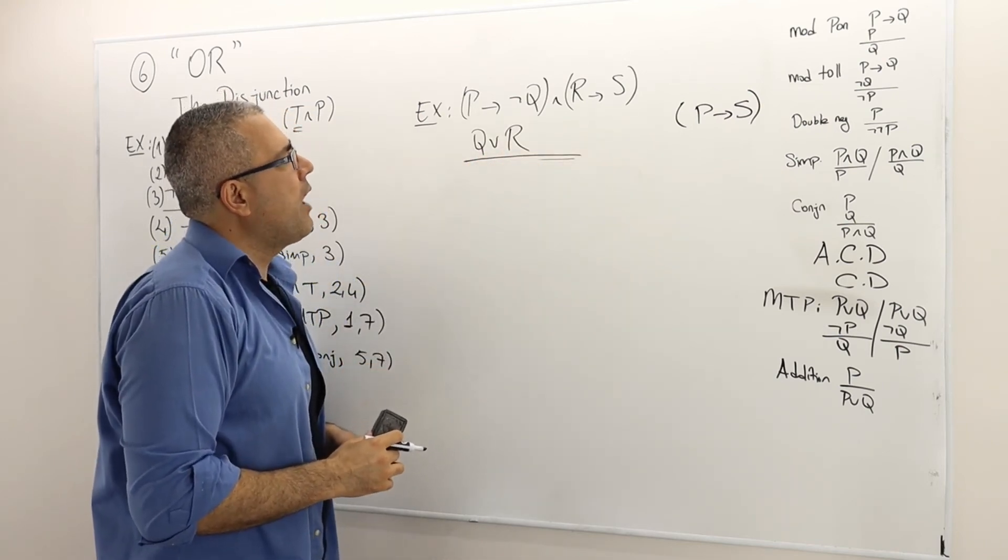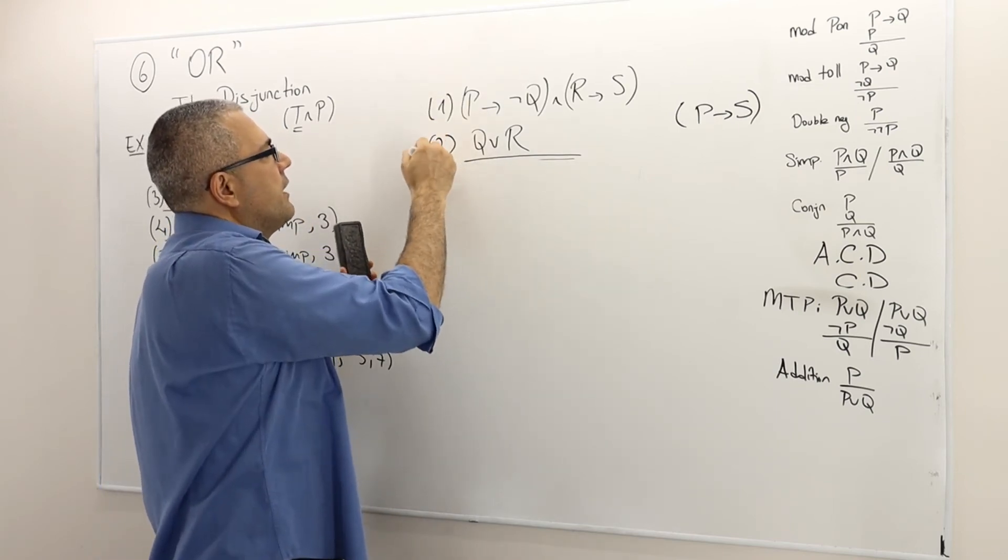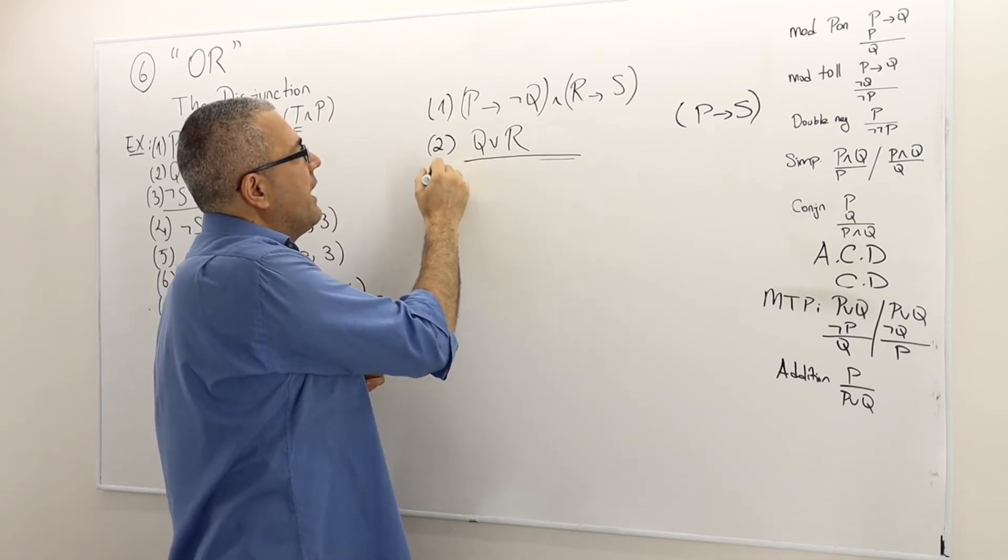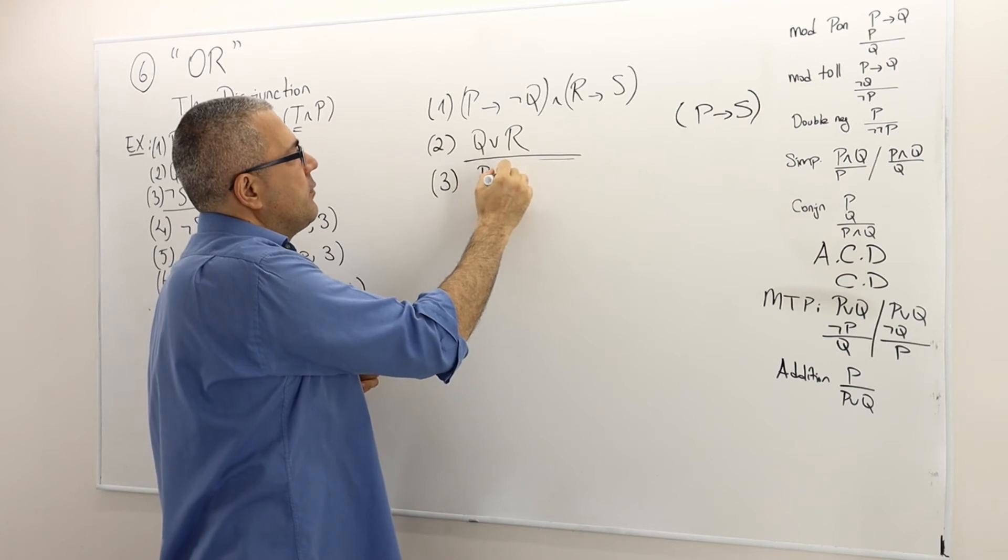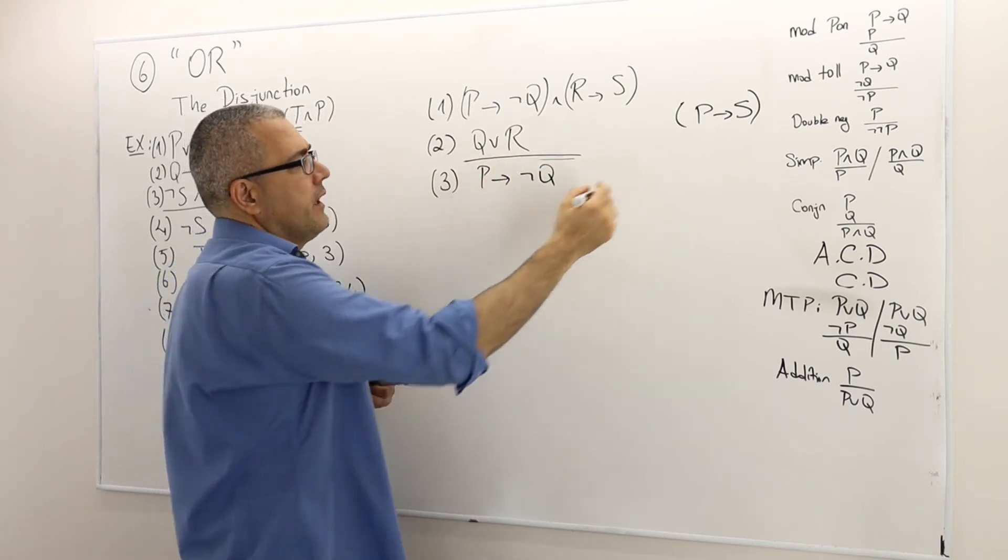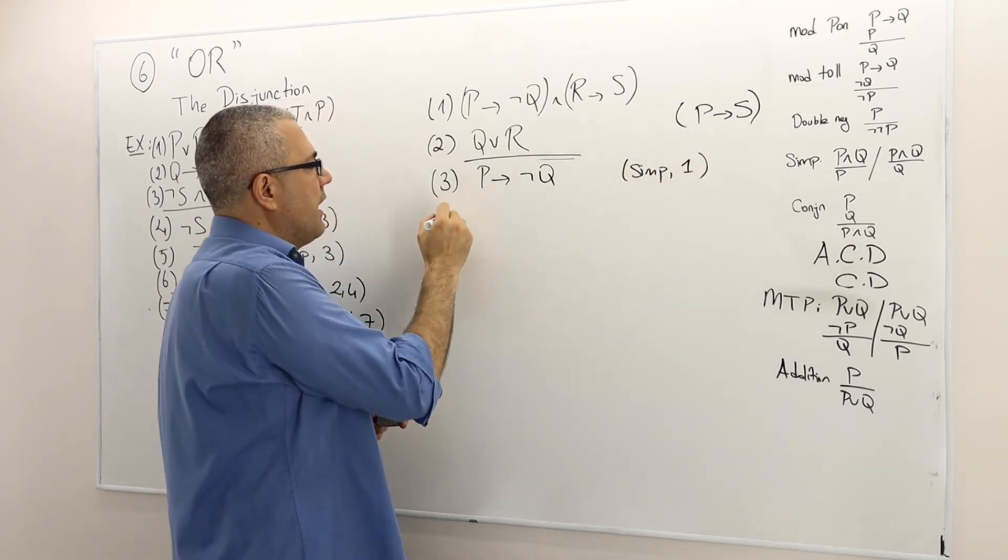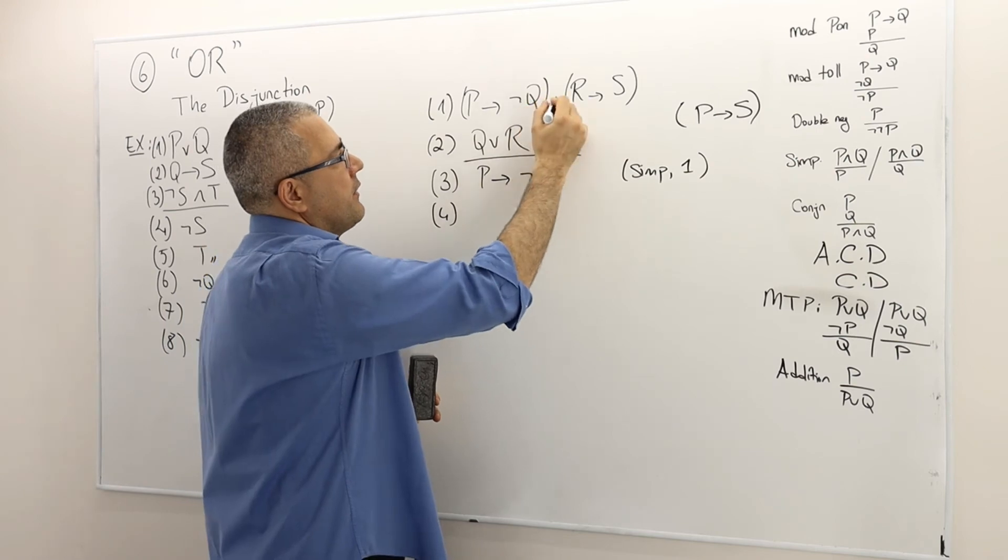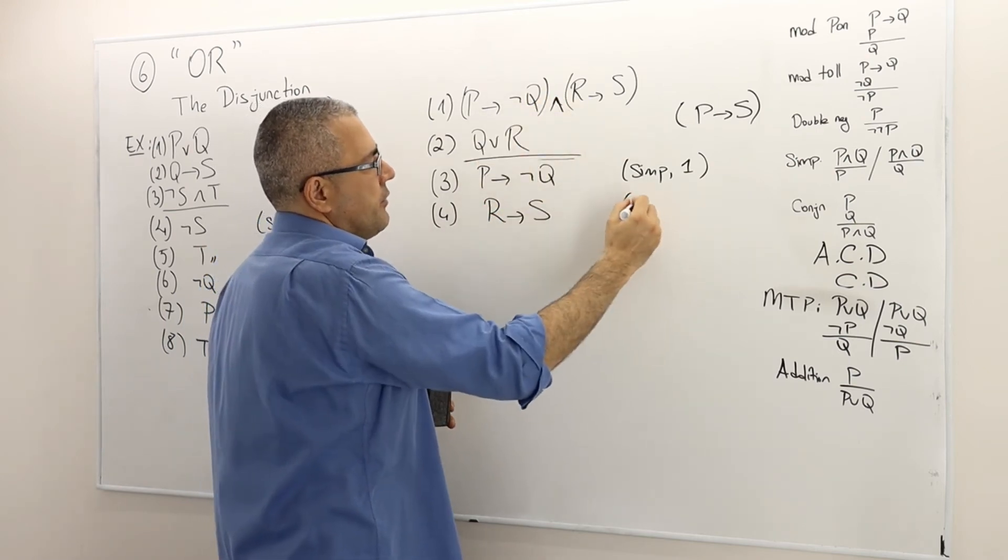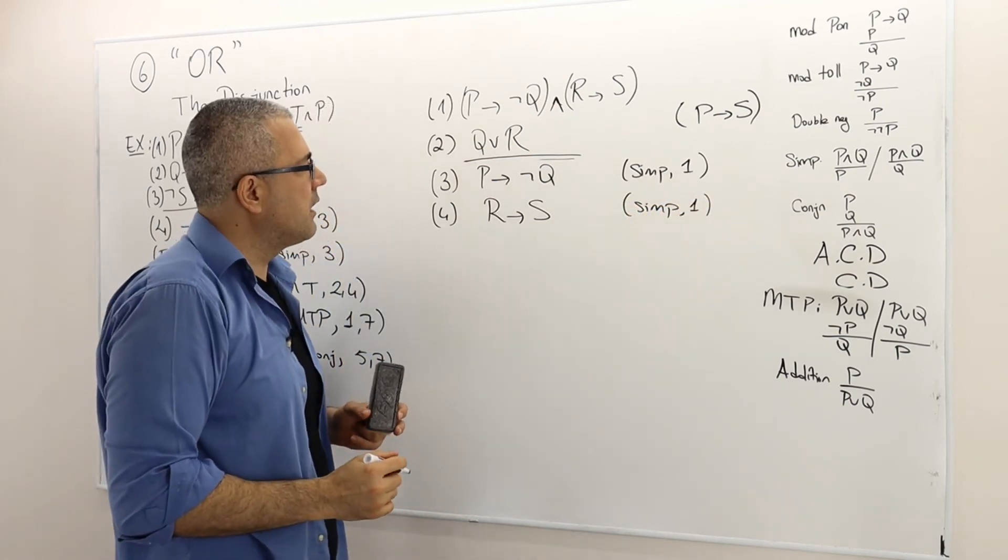What do I know? Let's number those premises so that I can easily refer. Thanks to one, I now actually know that P implies not Q must be true. This is simplification, simplification of the argument in line one. And similarly, because this is conjunction, R implies S must be true. So this is also simplification of the argument in line one.